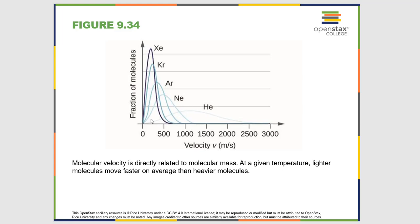However, the other thing that changes is the relative amounts. If you look here, there's a relatively small range of speeds for xenon, and a relatively large range of speeds for helium. So this is basically the two factors here.